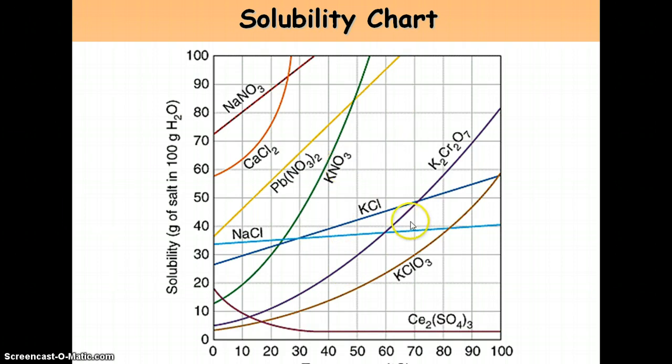Now if I have less than 40 grams, that indicates that I am unsaturated. I have less than the maximum amount. So if at 43 degrees, I had only 30 grams of solute, then I would be unsaturated. Now if at 43 degrees, I had more than 40 grams, say 50 or 60 grams above the line, above the line is considered supersaturated. So make sure you are familiar and comfortable with reading a solubility chart.